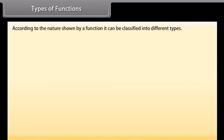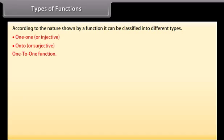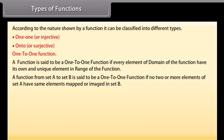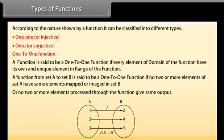Types of functions. According to the nature shown by a function, it can be classified into different types: one-one or injective, and onto or surjective. A function is said to be one-one if every element of the domain of the function has its own unique element in the range. A function from set A to set B is said to be a one-one function if no two or more elements of set A have the same elements mapped in set B, or no two or more elements processed through the function give the same output.